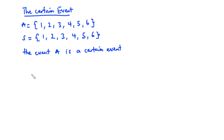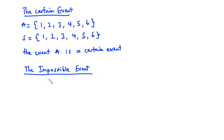Now let's talk about the impossible event. Let B be the event of obtaining a 7 when a six-sided die is tossed once. Since you cannot obtain a 7 when you toss a six-sided die, event B is said to be an impossible event. Set B is represented as a null set or empty set.